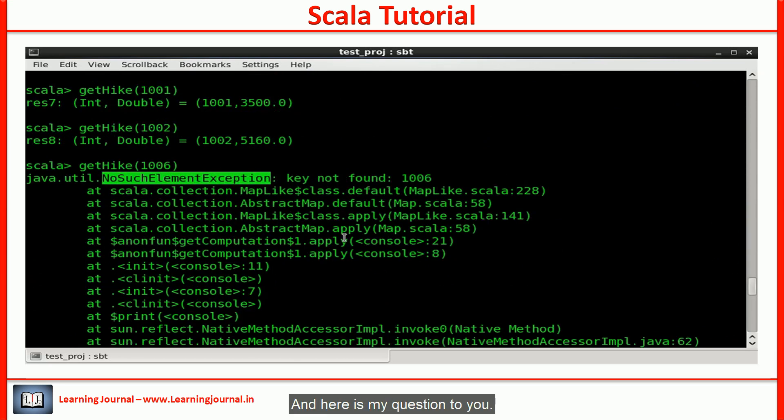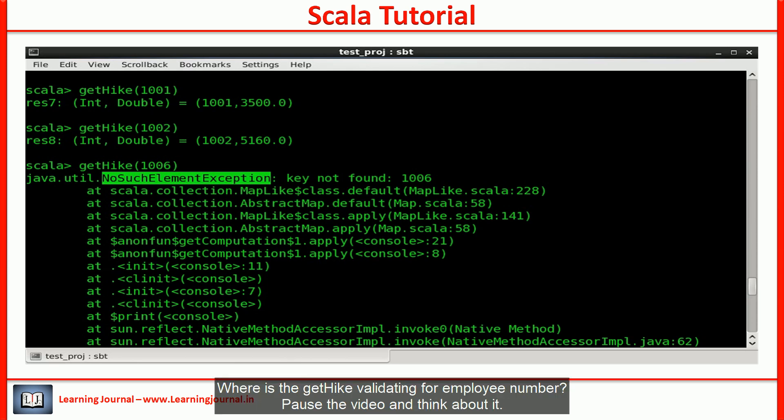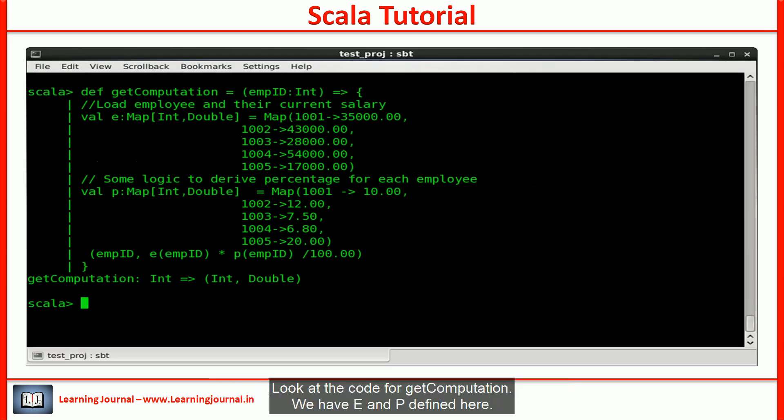And here is my question to you: where is the getHike validating for employee numbers?